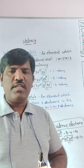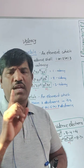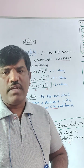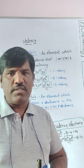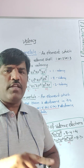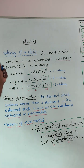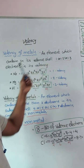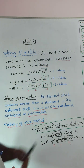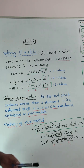For Metals, Valency is nothing but the Valence Electrons. If Valence Electrons is 1, then Valency is 1. If 2, then Valency is 2. If 3, then Valency is 3. An element which contains in its Valence Shell 1, 2, or 3 Electrons — that number is its Valency.